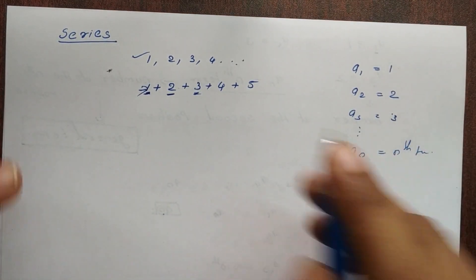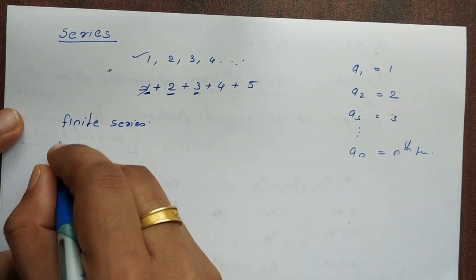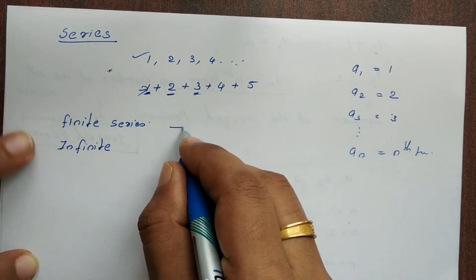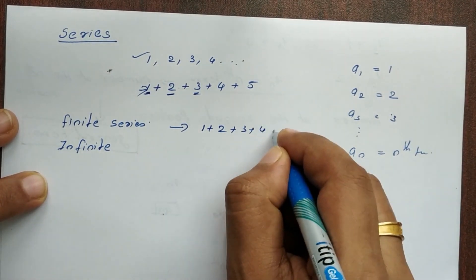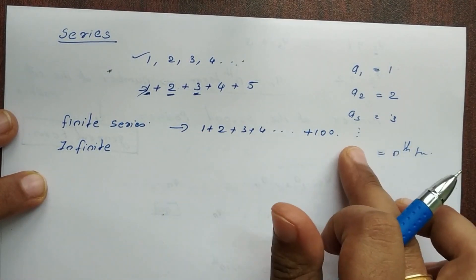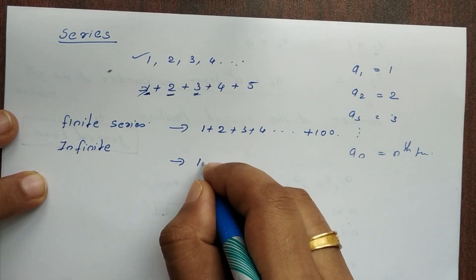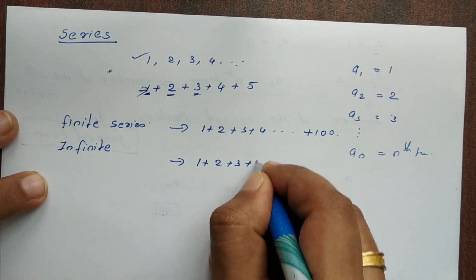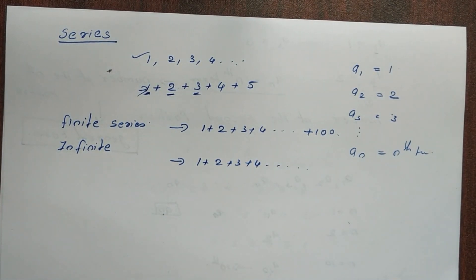We have a finite series — for example, 1 + 2 + 3 + 4 + ... + 100. We also have an infinite series — for example, 1 + 2 + 3 + ... continuing without end.